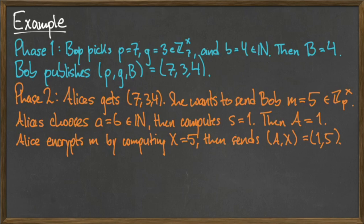Alice then sends the ordered pair (capital A, capital X) = (1, 5) to Bob, and ends phase 2. In phase 3, Bob receives the ordered pair (1, 5) from Alice, and computes the shared secret s = 1.